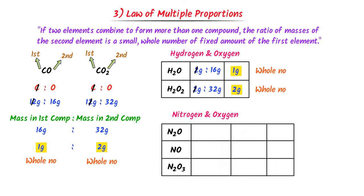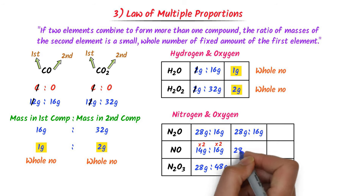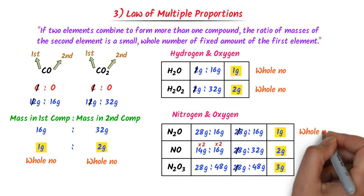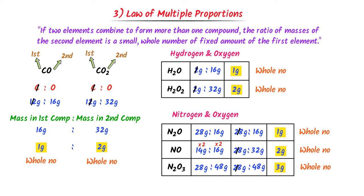Consider a third example with nitrogen oxides. The ratios of nitrogen to oxygen are 28 to 16, 28 to 32, and 28 to 48. Fixing nitrogen at 28 grams, the ratio of oxygen masses gives 1 to 2 to 3 — all small whole numbers. Therefore, the law of multiple proportion states that the ratio of masses of the second element is always a small whole number for a fixed amount of the first element across different compounds.